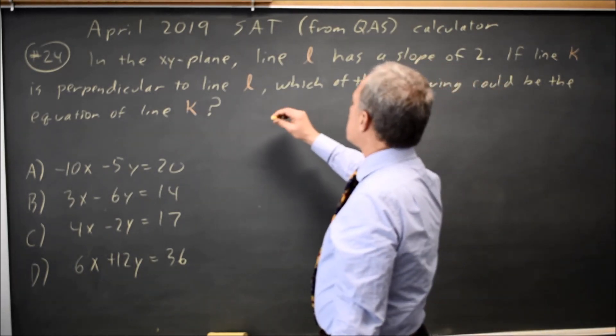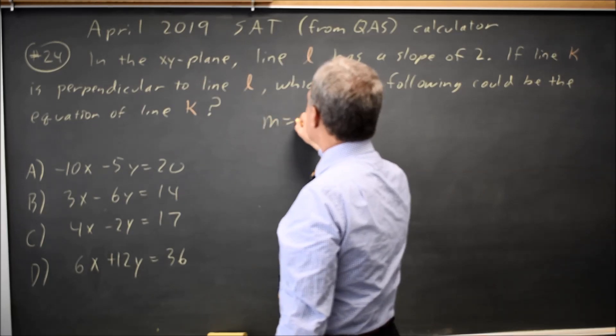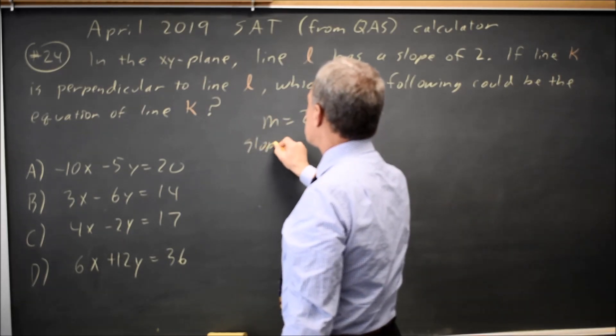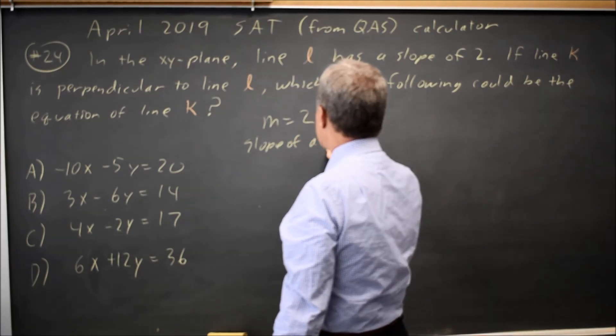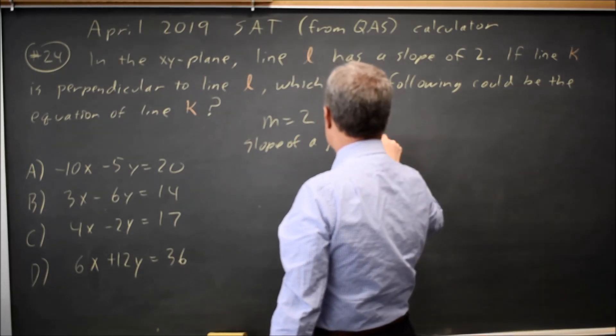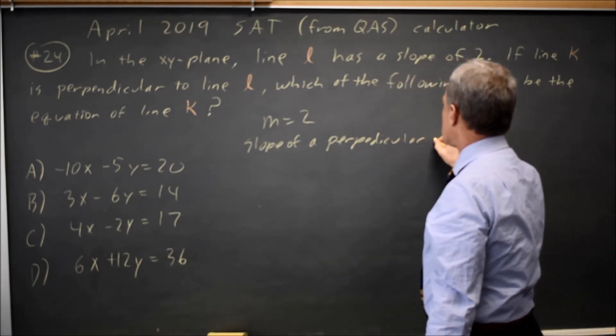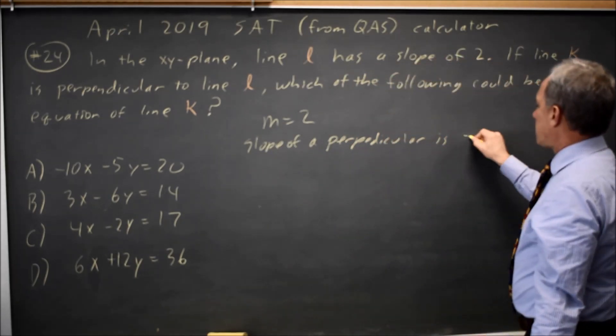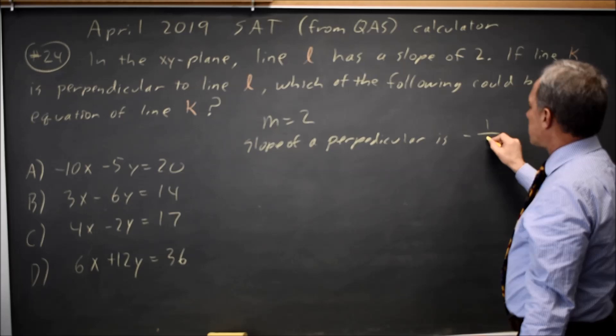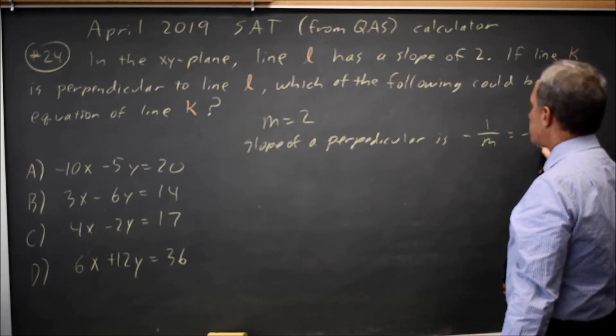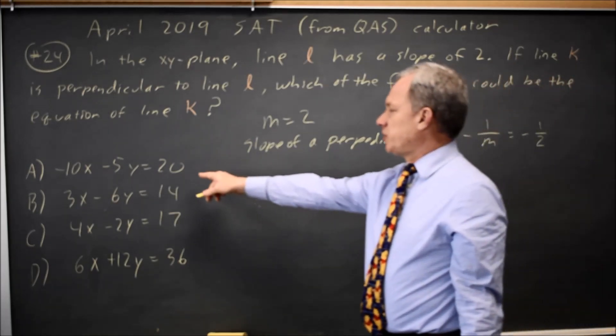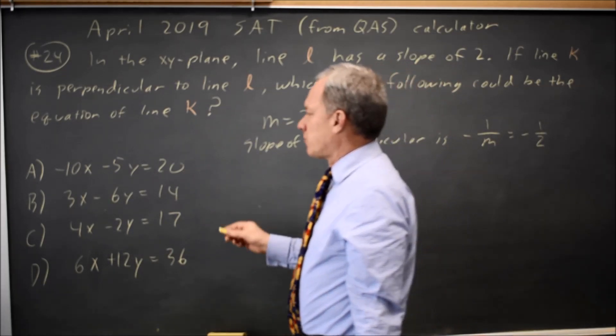We know that if M equals 2, the slope of a perpendicular is negative 1 over the slope, negative 1 over M, which is negative 1 over 2. So I'll find the slope of each of these and see which one has slope negative 1 half.